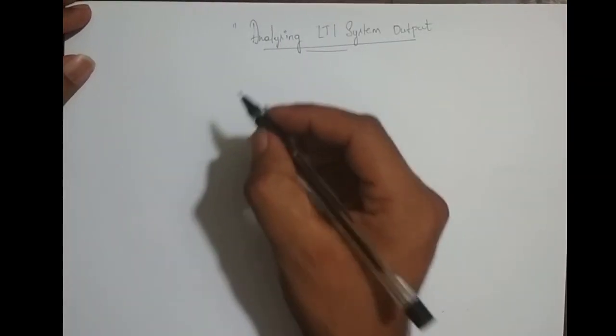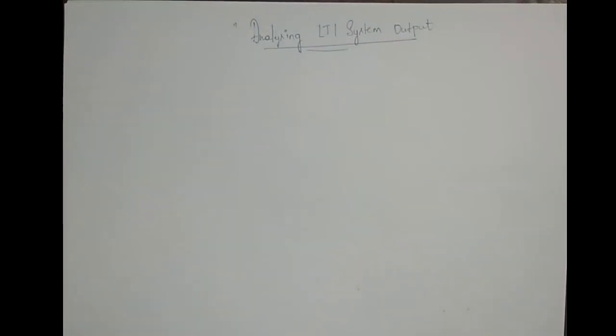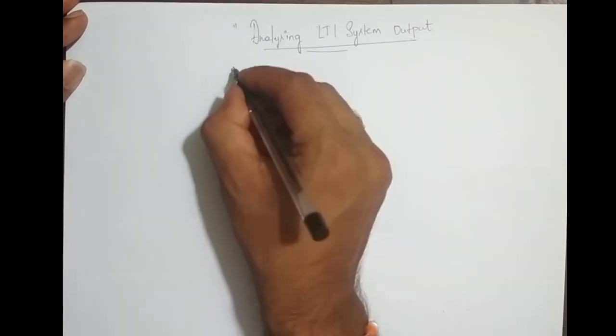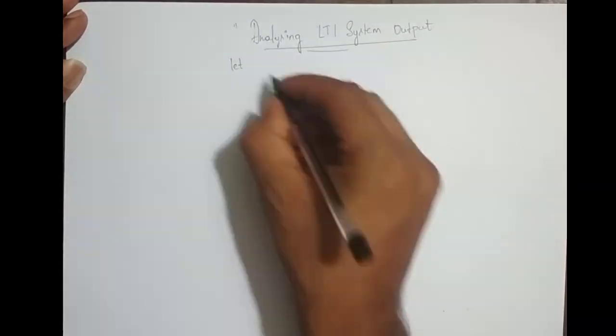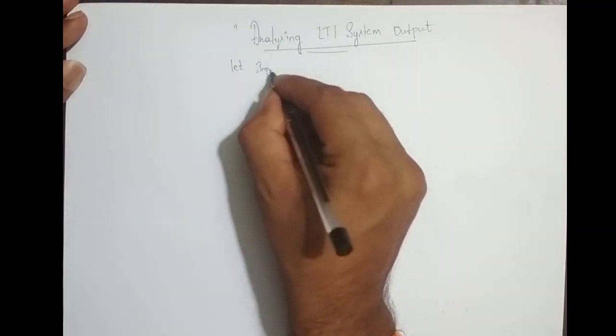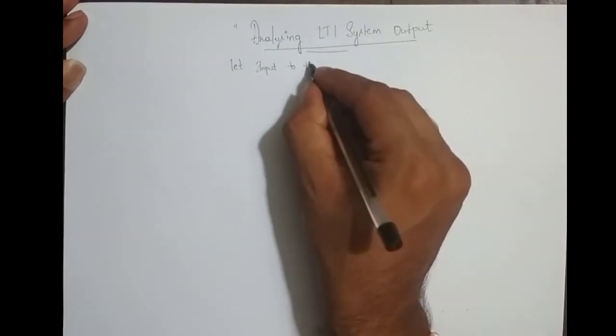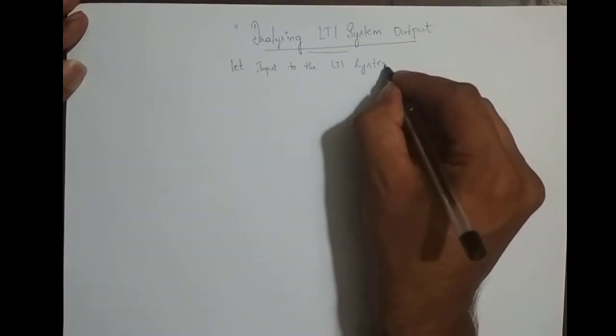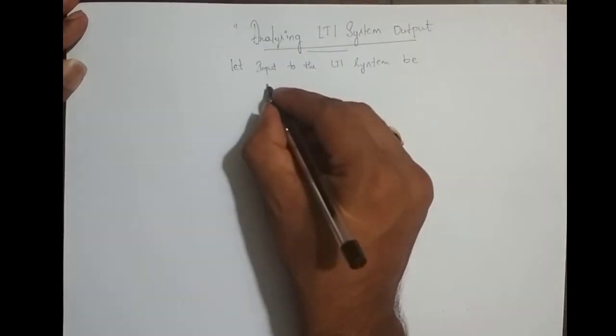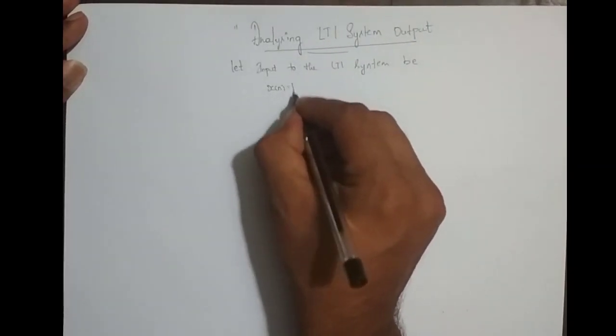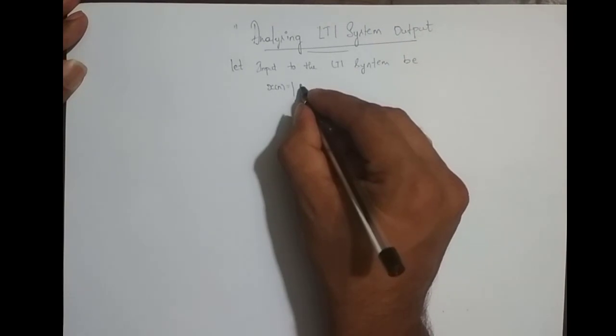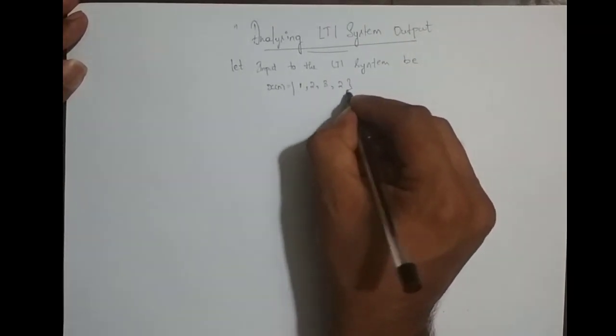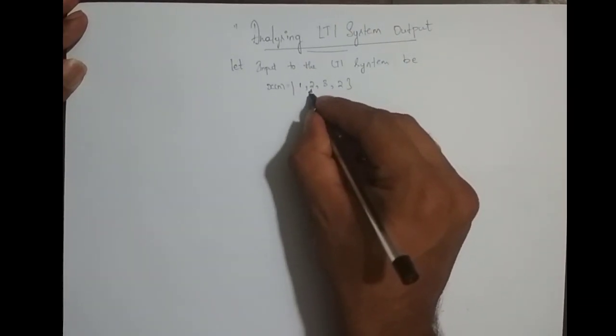So we will take up a simple input signal to the system and a simple impulse response. Let input to the LTI system be x(n) equals 1, 2, 3, 2, and the sample at n equals 0 is 2.